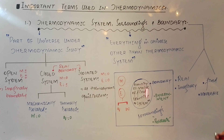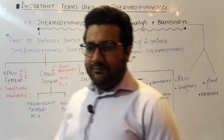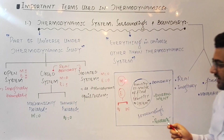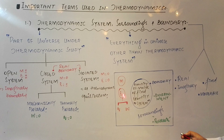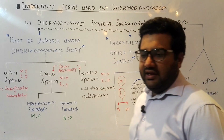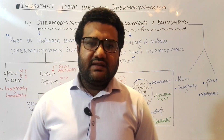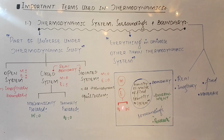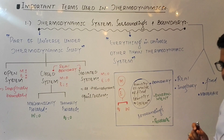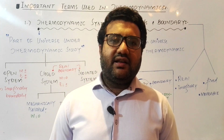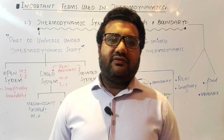Whenever we discuss the system and surroundings, the system and surroundings exchange energy and matter with each other. Energy is exchanged in two ways: either in the form of heat or in the form of work. Keep this in mind — energy exchange between the system and surroundings takes place either in the form of work or in the form of heat.